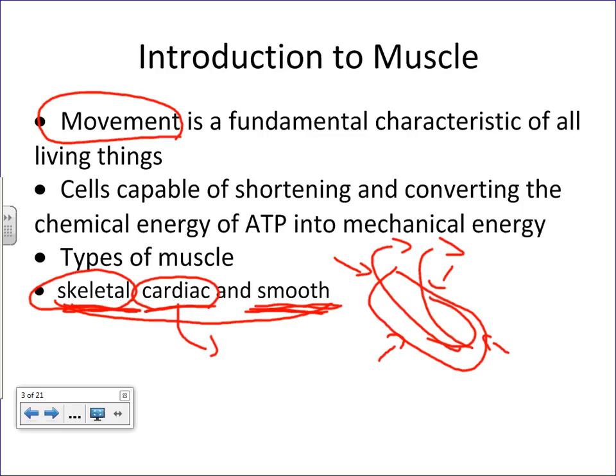Smooth muscle is a type of muscle tissue found lining the hollow tubular organs of the body, like your blood vessels, the organs of your GI tract, lymphatic vessels, and the iris of your eye. Another area where smooth muscle is found is in the skin, forming what are called arrector pili muscles — pili meaning hair.